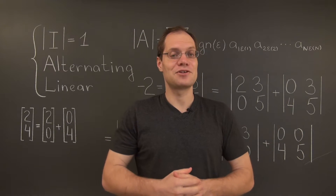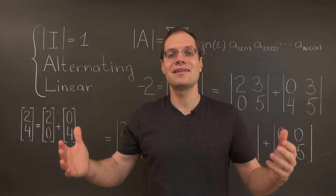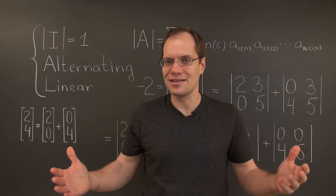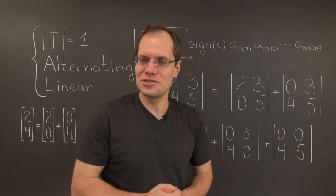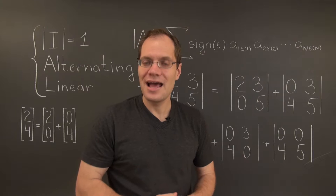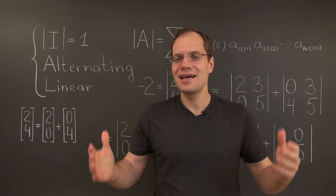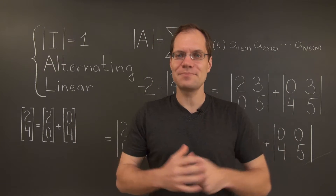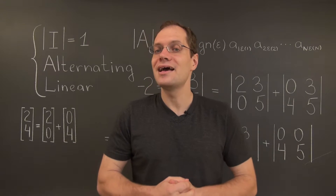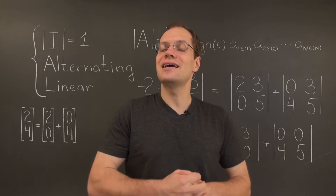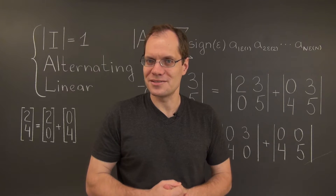After three steps, after we've analyzed the third column, we'll end up with n cubed determinants. And finally, after all steps are done, we'll end up with n to the n determinants.